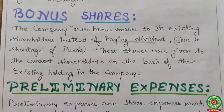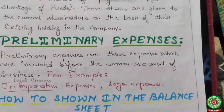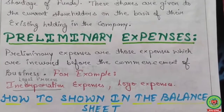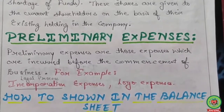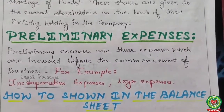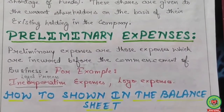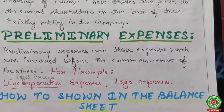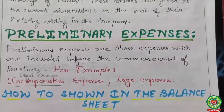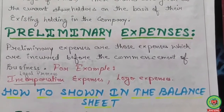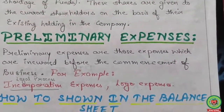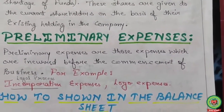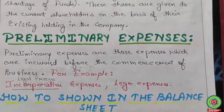Preliminary expenses are those expenses which are incurred before the commencement of business — for example, incorporation expenses like legal expenses and logo expenses. These are the expenditures incurred by the business or company for the very first time at the start.